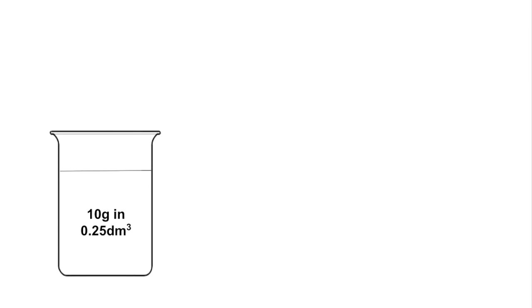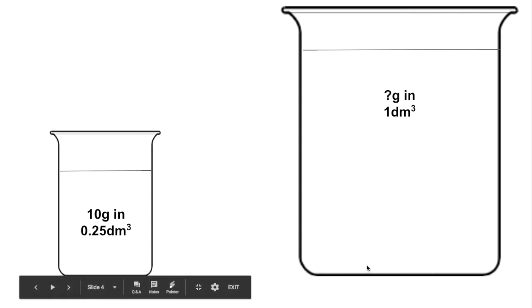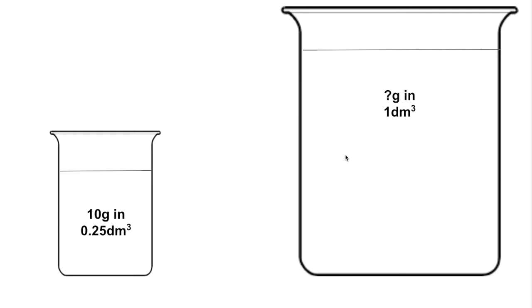We'll start with some basic calculations. If you've got 10 grams of a chemical dissolved in 0.25 dm³, we want to know the concentration — that is, how many grams would be in a full decimetre cubed. That 0.25 dm³ is a quarter of a dm³, so the full volume is four times larger. To keep the same concentration you need four times as many grams: 40 grams. So this solution has a concentration of 40 g/dm³.